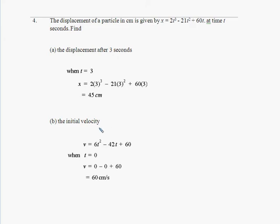For the initial velocity, we know that initial means t equals zero. To get our velocity function we derive the displacement function, which gives us v = 6t² - 42t + 60. Substituting t equals zero, we get 60 centimeters per second. So initially it was moving at 60 cm/s in a positive direction, meaning to the right.